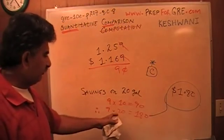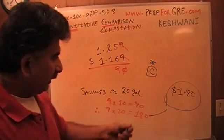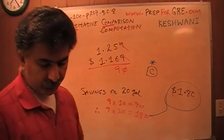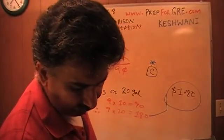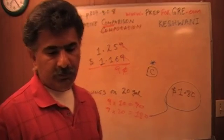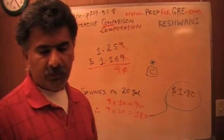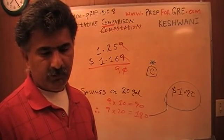9 times 20 is the same as $1.80. Quite simple and quite straightforward. 3 quarters of the people who took the exam got it right — 74% got it right.